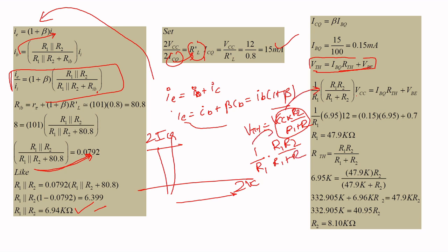Substituting the known values into the Thevenin equivalent equation and rearranging gives R1 = 47 kilohms (approximately). Then using R_th = R1 × R2 / (R1 + R2) = 6.94k, substituting R1 = 47k and solving gives R2 = 8.10 kilohms.